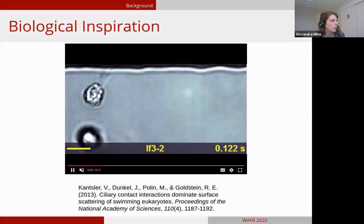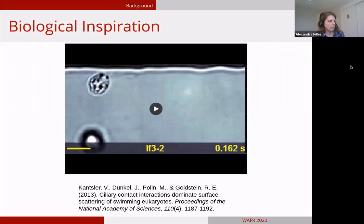Here we see a video of a swimming eukaryote. He's coming up to this boundary of his environment at the top, and then they rotate depending on the ciliary interactions and leave the environment at a controllable angle. For more, you can look at this paper on ciliary contact interactions and the relationship with surface scattering. So we find this really interesting.